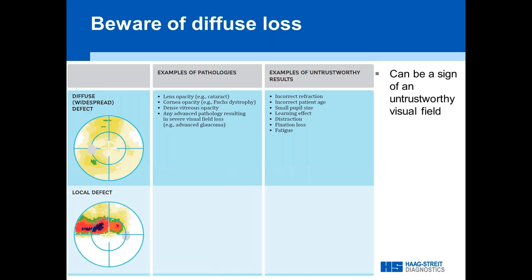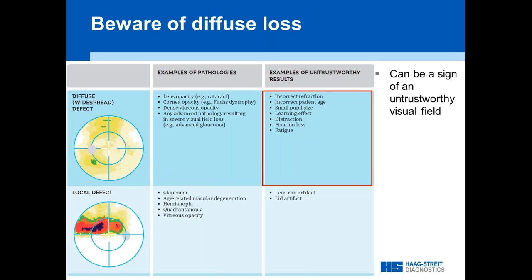Diffuse loss is another sign of an untrustworthy visual field, and it makes sense to be aware of it. Local defects are typically what we use visual field testing for — glaucoma and some neurological diseases — and this is what we want to track. Diffuse loss is more a confounding issue, either because of a second disease or an unreliable result. There are also untrustworthy field types with lens or lid artifacts. If you find diffuse loss, ask yourself why it's there. If you find a pathology explaining it, okay. If not, take the visual field test with caution.